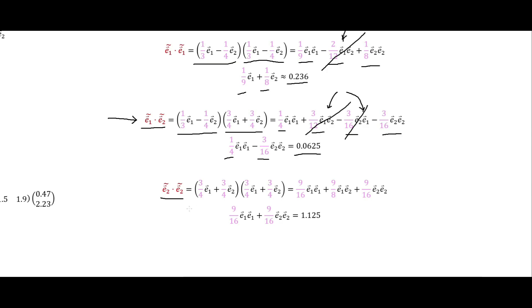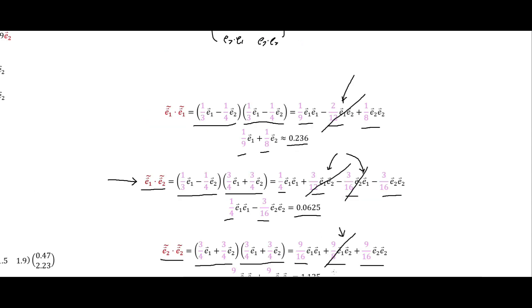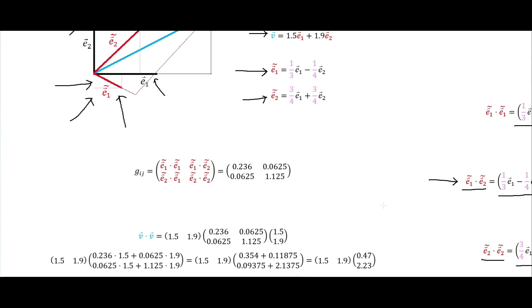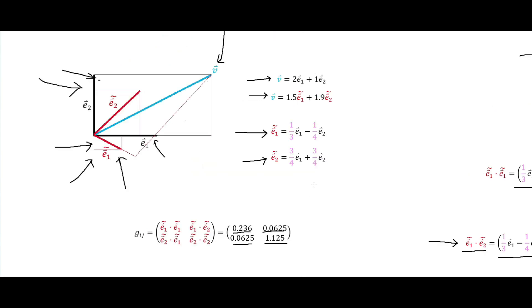For ẽ₂·ẽ₂, we FOIL out ẽ₂ in terms of the orthonormal basis, getting (9/16)e₁e₁ + (9/8)e₁e₂ + (9/16)e₂e₂. The cross term goes to zero, leaving 9/16 + 9/16 = 1.125. Assembling the full metric tensor, we have: g = [[0.236, 0.0625], [0.0625, 1.125]].